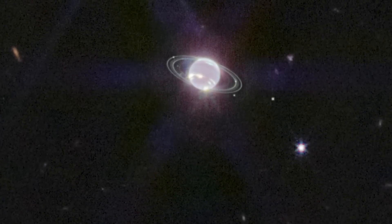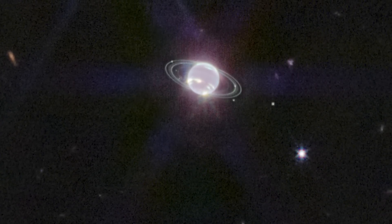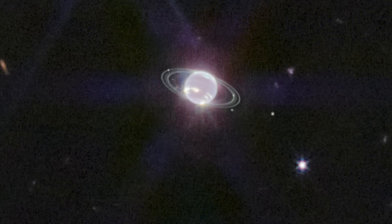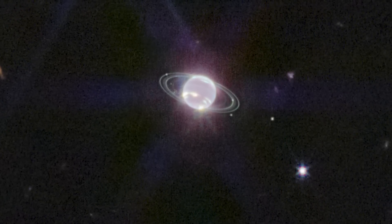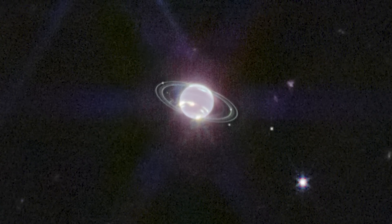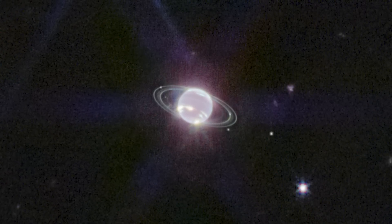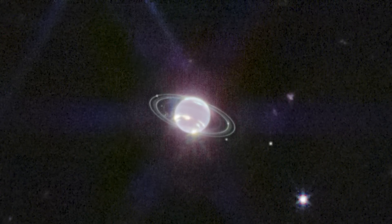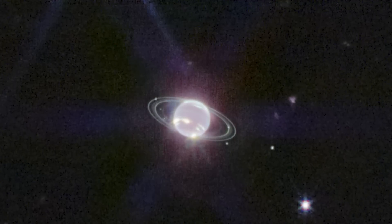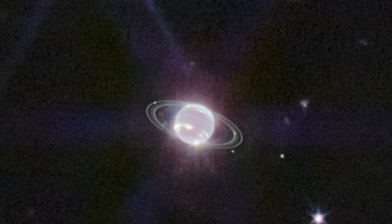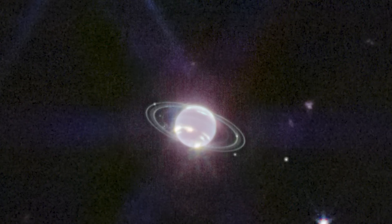The ice giant Neptune has a higher methane content than the gas giants Jupiter and Saturn, and Webb's photograph indicates that near-infrared methane is not blue. Methane significantly absorbs red and infrared light, causing the planet to appear dark at near-infrared wavelengths, except for high-altitude clouds.